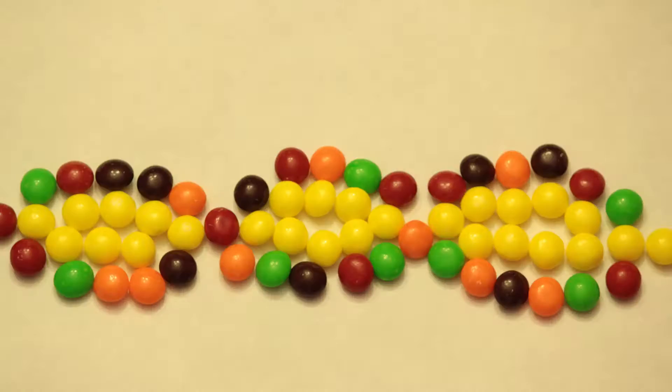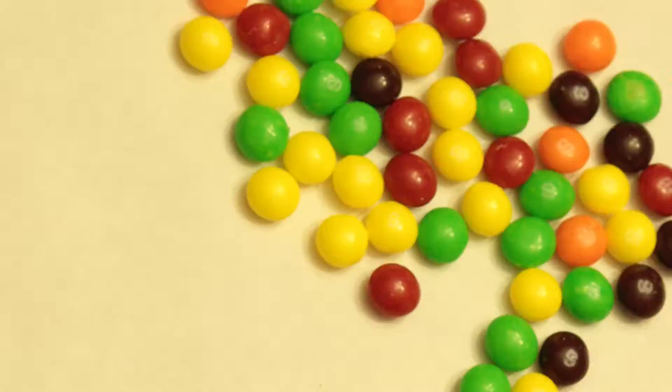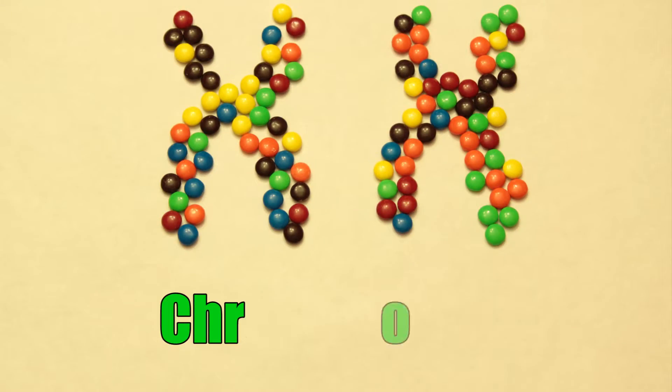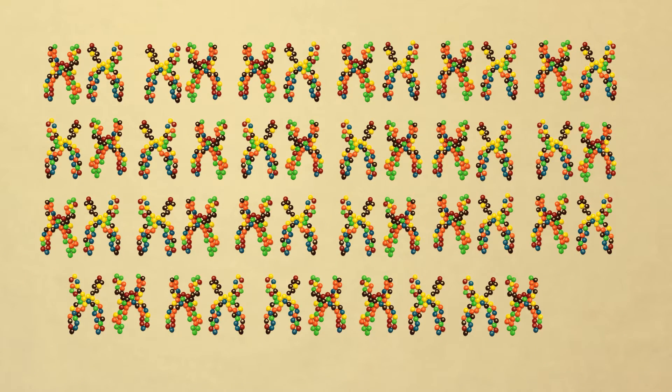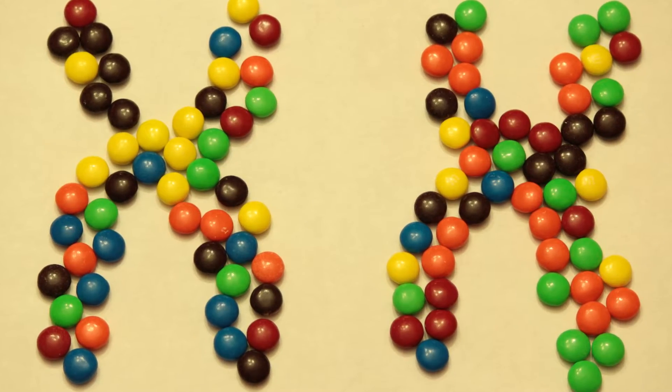But where do you get your genes? From your parents. Your DNA is wrapped together in structures called chromosomes. You have 23 pairs of chromosomes, half from your mom and half from your dad. Genes are sections of DNA carried on the chromosomes. Since you have two of each chromosome, you have two of every gene.